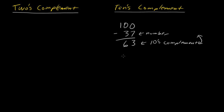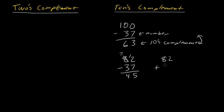Here's what's kind of interesting about it. Suppose I have 82 and I want to subtract away 37. That's 45. But suppose instead I add in 63 — the 10's complement of 37. So 82 plus 63: 2 plus 3 is 5, 8 plus 6 is 14. We have 145. If I just ignored this leading digit, that part over here is 45. So subtracting a number gives the same result as adding in its 10's complement, if we ignore the extra digit.